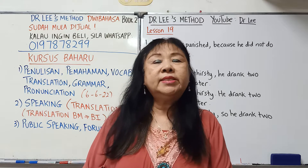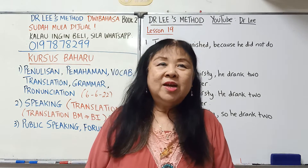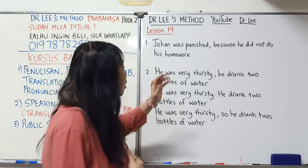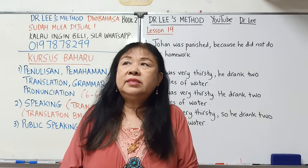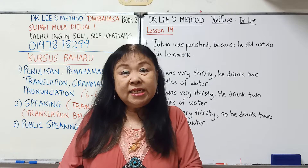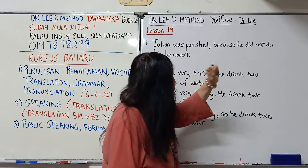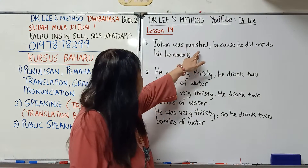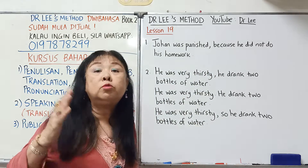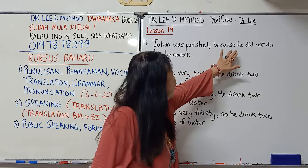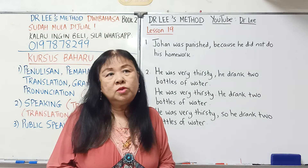好，今天我要跟大家分享：讲跟写其实是不一样的。比如我讲："Johan was punished because he did not do his homework." 你听起来觉得对，没有问题。但是当我把这句话写出来，你就会看到问题所在了。Johan was punished — 当我们有 was 后面跟 ed，这叫做 past participle，用在被动词，所以 Johan 被处罚。